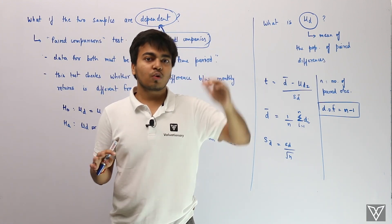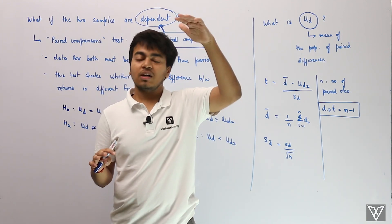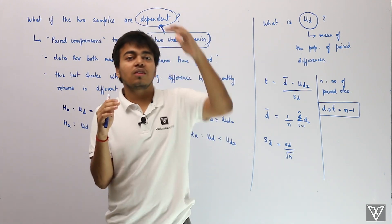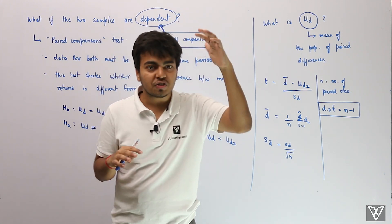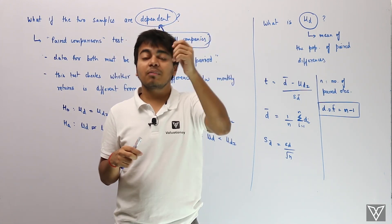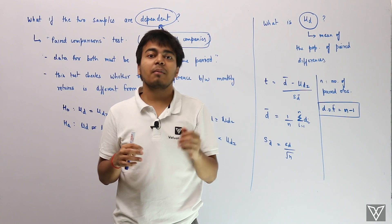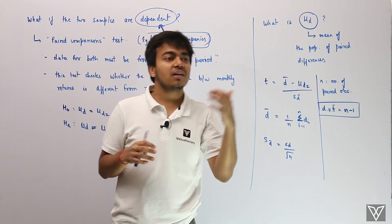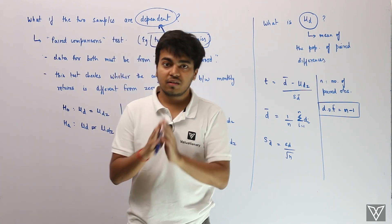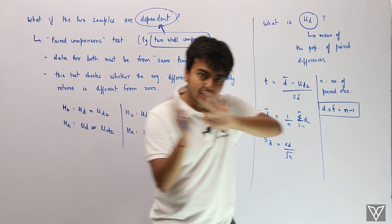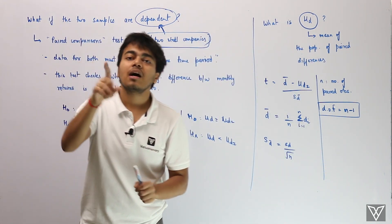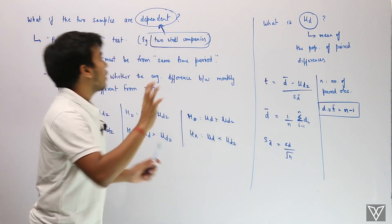In the previous case, we had the assumption where the two series were independent of each other. With independent series, we were also assuming equal variance. That was a separate case altogether. Now we are assuming that the series are dependent.